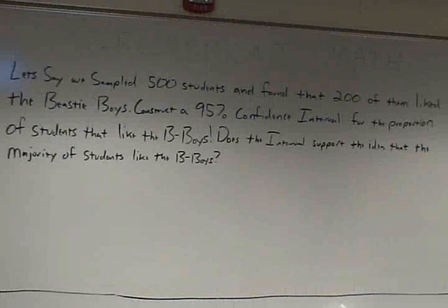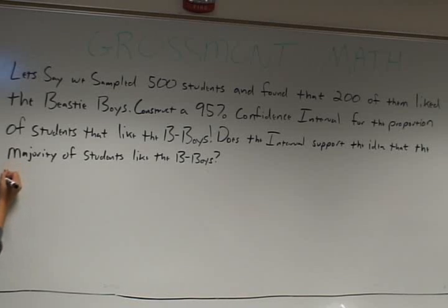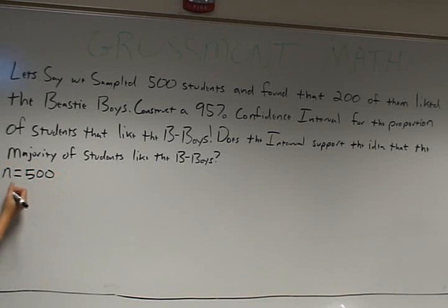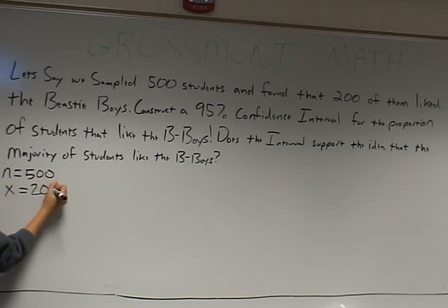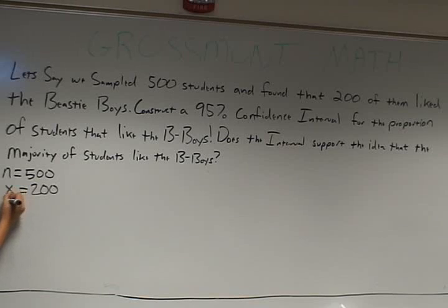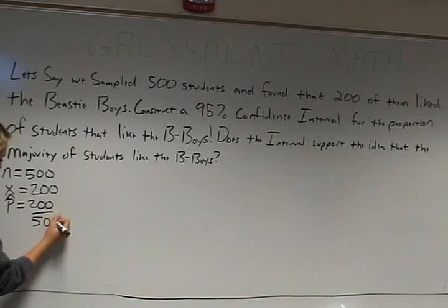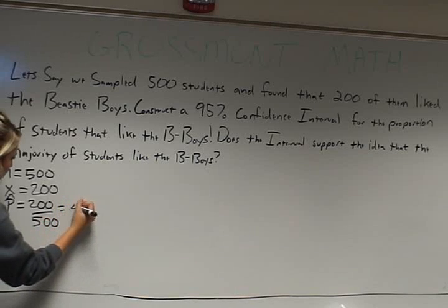In order to find the confidence interval for this problem, you have to find n, which equals 500, as well as x, which equals 200. With this information you can find p-hat, which is 200 divided by 500, equals 0.4.